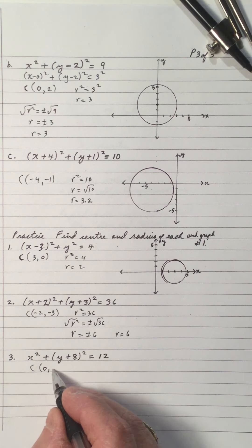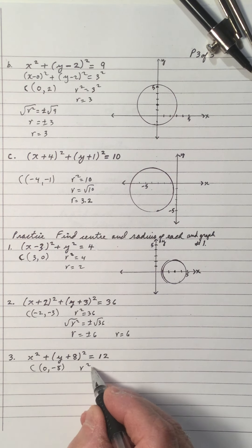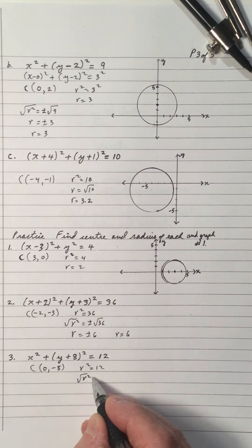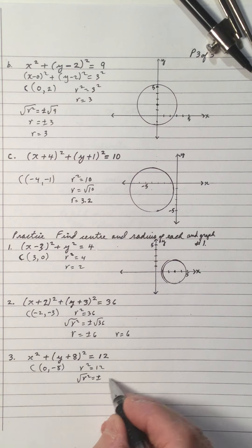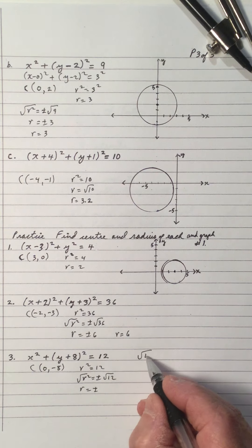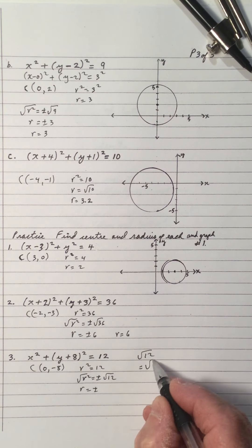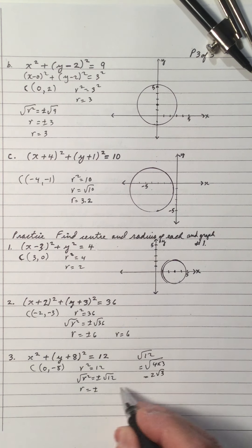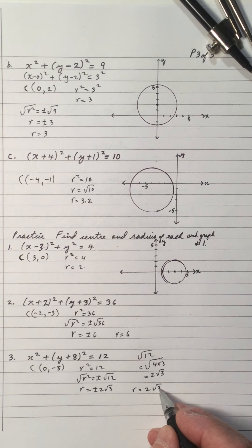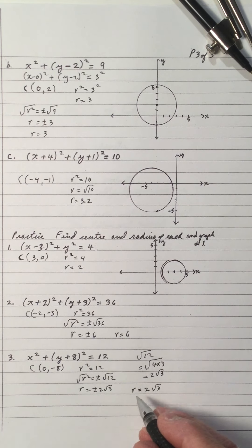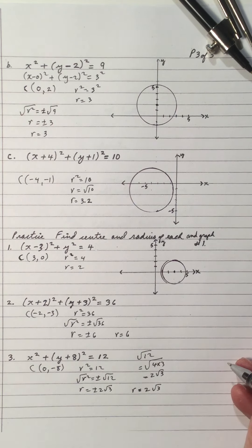For number 3: the center is x equals 0, y equals negative 8. R squared equals 12. The square root of r squared is plus or minus the square root of 12, which equals the square root of 4 times 3. The square root of 4 is 2, so that's 2 root 3. The radius is positive 2 root 3. Use a calculator to get the decimal only if you need to graph it.